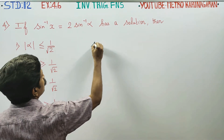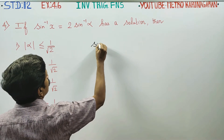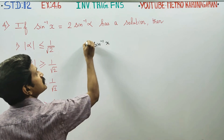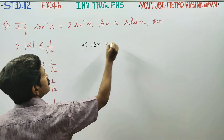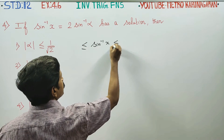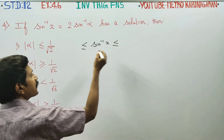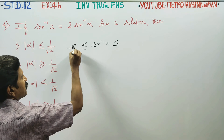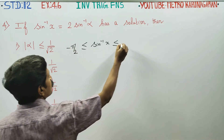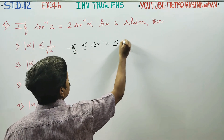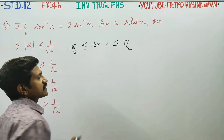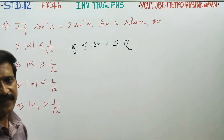We very well know — or you must know — that sin inverse x has a principal range: the answer must lie between minus 90 and plus 90 degrees. This is the principal value of sin inverse x.